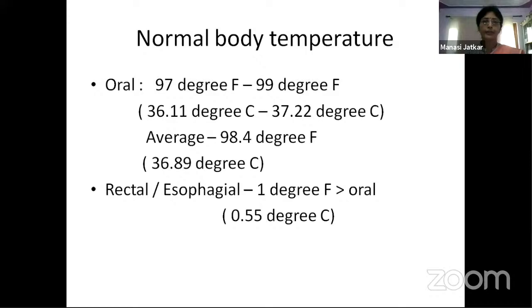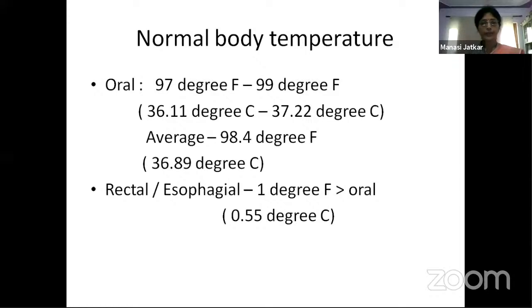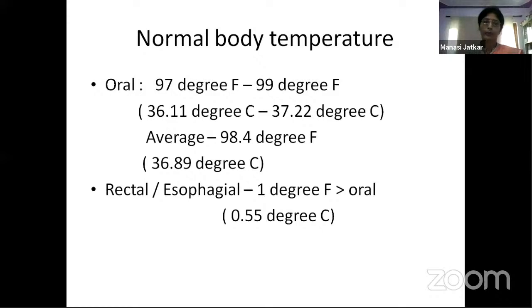The normal body temperature: axillary temperature is convenient; oral temperature ranges approximately 97°F to 99°F, or an average of 98.4°F — equivalently 36.11°C to 37.22°C, average 36.81°C. Rectal or esophageal temperature represents core temperature and is about 1°F (0.55°C) higher than oral temperature.